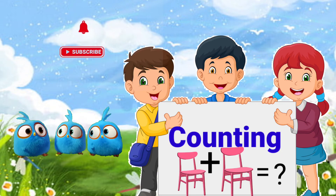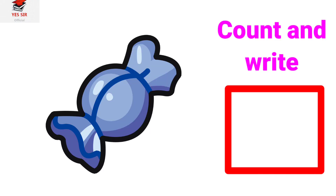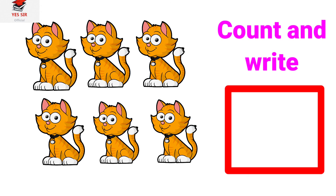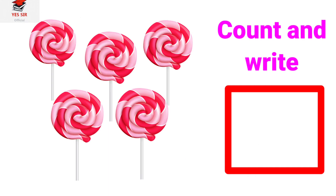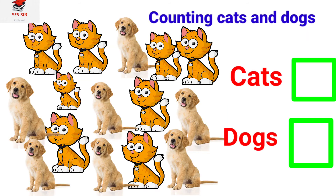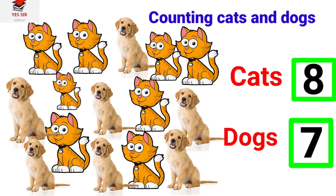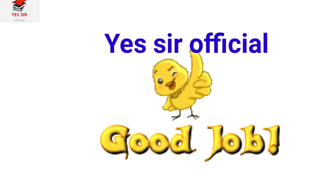Next, counting the objects. Tell me how many? The correct answer is 1. Next, how many cats are here? 6. Very good. Tell me. 11. Very good. Now see. How many candy? 5. Very good. How many cats and dogs are here? 8 cats. 7 dogs. Very good.